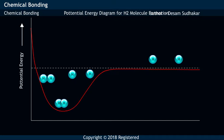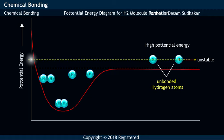In the potential energy diagram for hydrogen molecule formation, it may be noticed that the unbonded hydrogen atoms have high potential energy, that is lower stability.